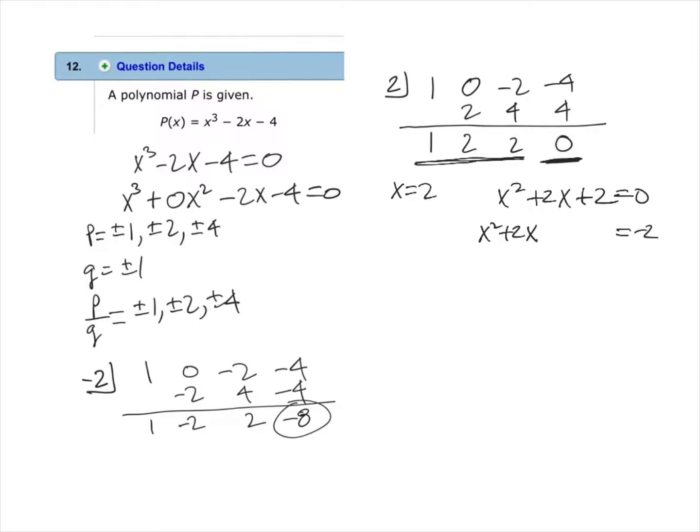We can complete the square with this by first setting equal to 0 and then subtracting 2 from both sides. We leave this space because we are going to write in that space the value that will complete the square on the left. We take the coefficient on the x term, which is 2, divide it by 2, and square it. So this will be 1 squared, which is 1.